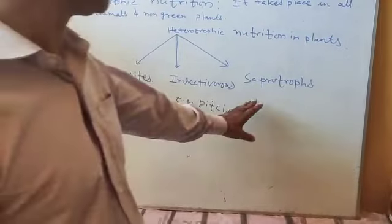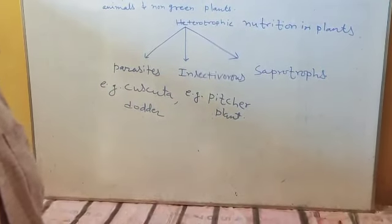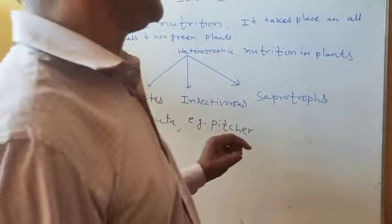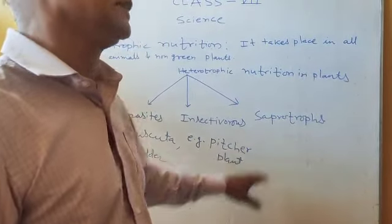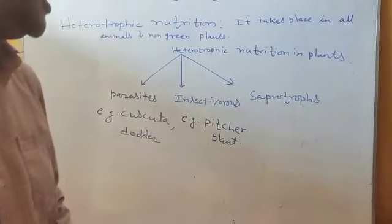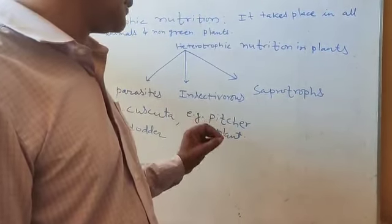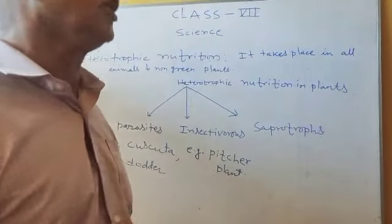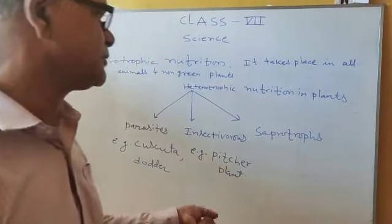The third type is saprotroph. Saprotrophic plants are those which secrete a chemical that destroys the decaying parts of plants and animals and takes nutrition from them. Examples of saprotrophic plants include fungus and mushroom — mushroom is one of the best examples of a saprotroph.